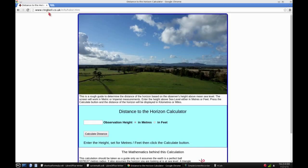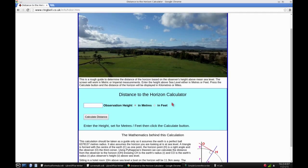This is ringbell.co.uk/info/hdisk.htm. That's pretty simple here. You just put your height in feet. Let's just say three feet. Calculate distance and your distance to horizon is then 2.1 miles.